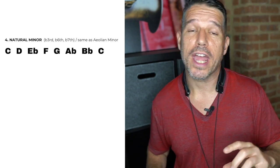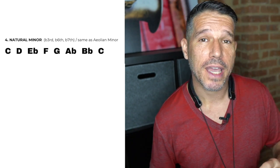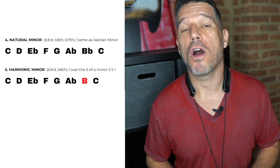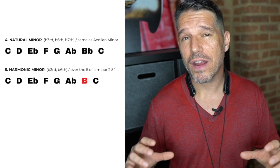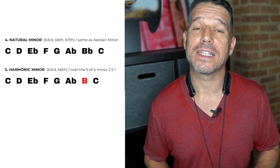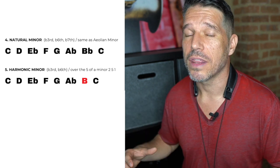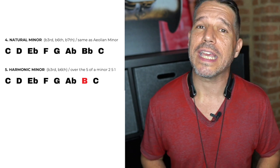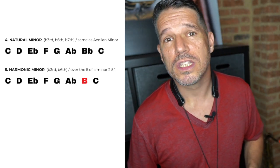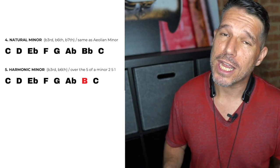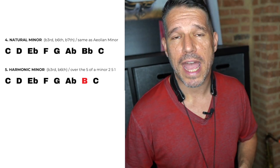Now we're going to take this natural minor scale and change one note to create the harmonic minor scale. The harmonic minor has a very unique sound because it has a flat third, a flat sixth, and a major seventh. For C harmonic minor, you have a lowered third — E flat, a lowered sixth — A flat, and a major seventh — B natural.